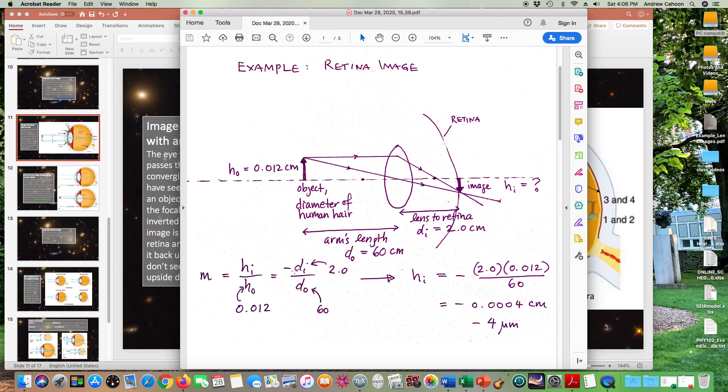In the magnification formula, there's a negative sign here. So we're going to end up with a negative magnification, indicating that the image is flipped upside down. Last thing is the object height, which we've already said is 0.012. So we plug in all these numbers, and we get an answer of negative 0.0004 centimeters.